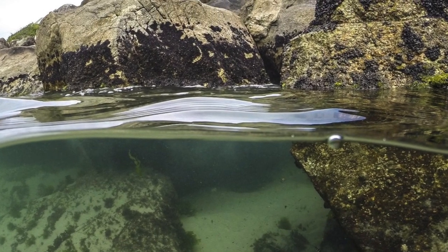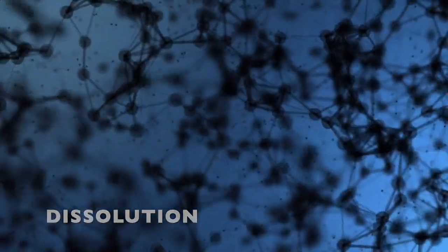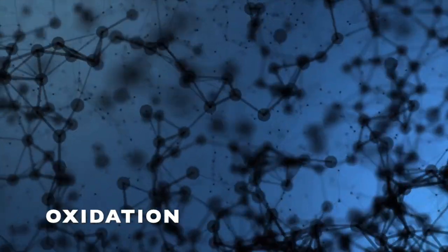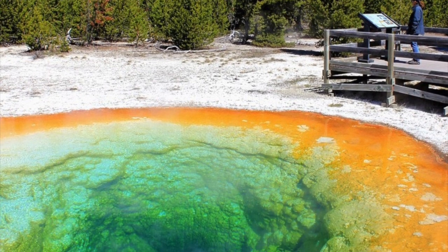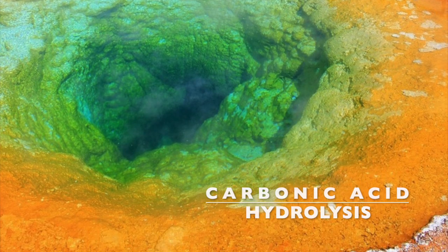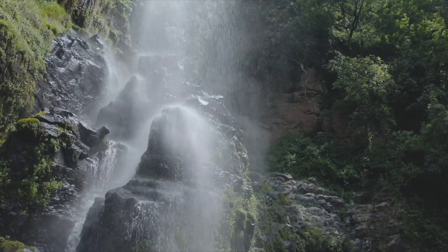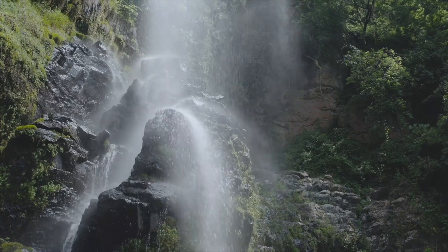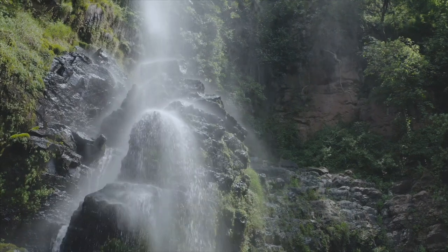Dissolution means when rocks and minerals' ionic components are disassociated, broken apart, and dispersed by water. Oxidation is simply the breakdown of rock by oxygen and water. We also have carbonic acid and hydrolysis. Hydrolysis is a chemical reaction when a molecule of water breaks other chemical bonds. Carbonic acid forms when carbon dioxide — the fifth most abundant gas in our atmosphere — dissolves in water, which happens naturally in clouds. So precipitation is normally slightly acidic, meaning acid rain is beating down on these rocks.